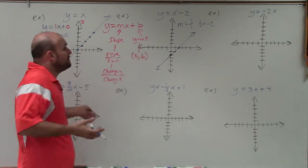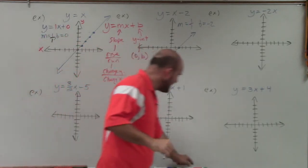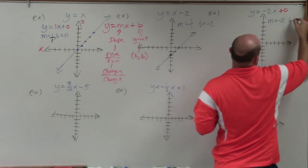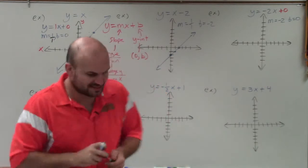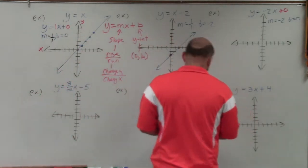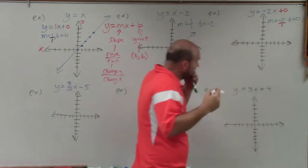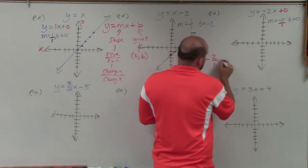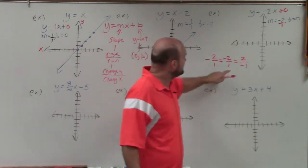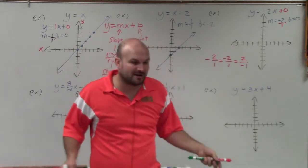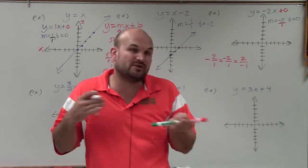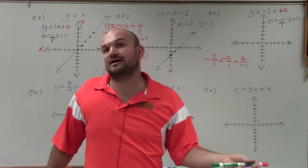Now let's do y equals 2x. We don't have a b, but we can always add a 0, so m equals negative 2 and b equals 0. I like dealing with negative slopes. The slope is negative and it's not a fraction, so first rewrite it as a fraction. It's important to understand that negative 2 over 1 is equivalent to positive 2 over negative 1 — these are all the same thing. It doesn't matter if the negative is in the denominator, numerator, or out front.